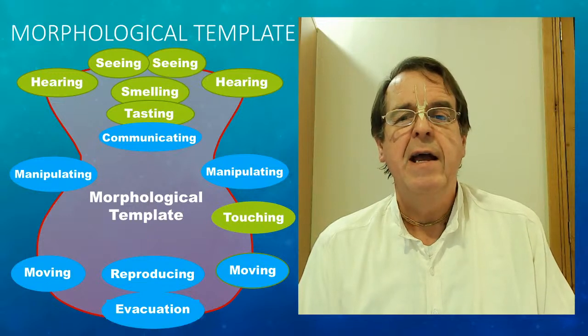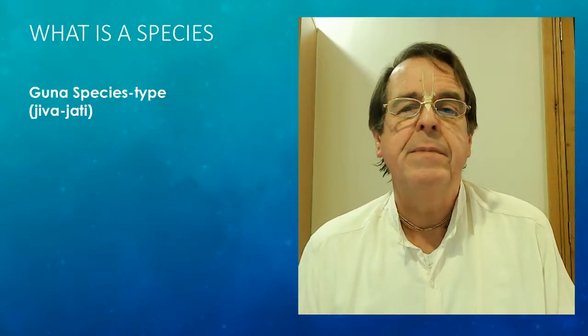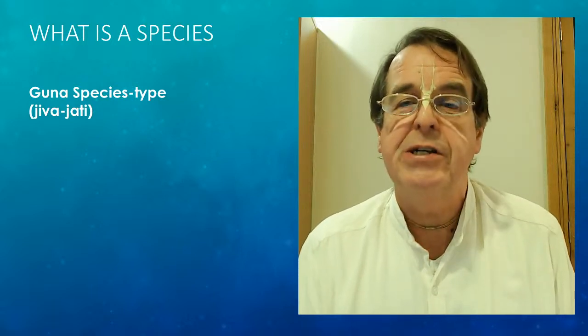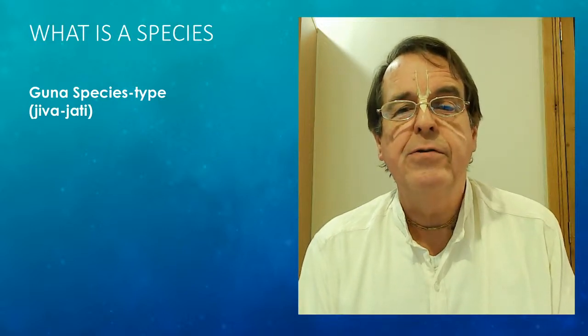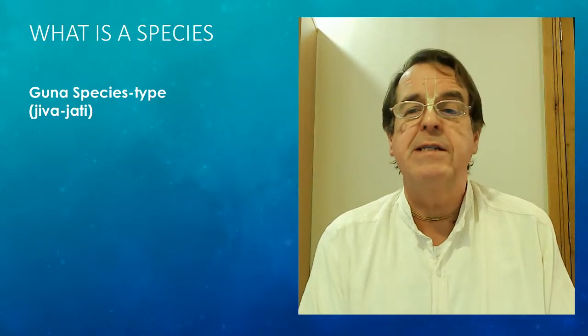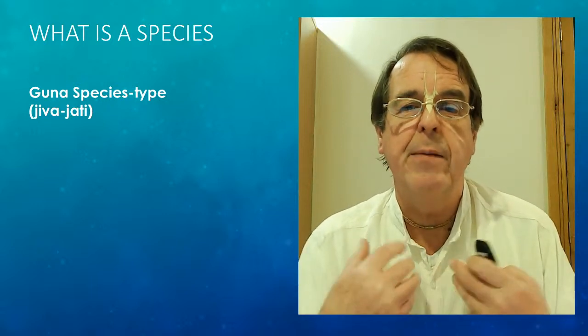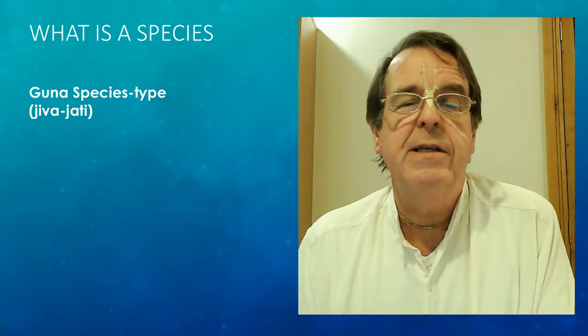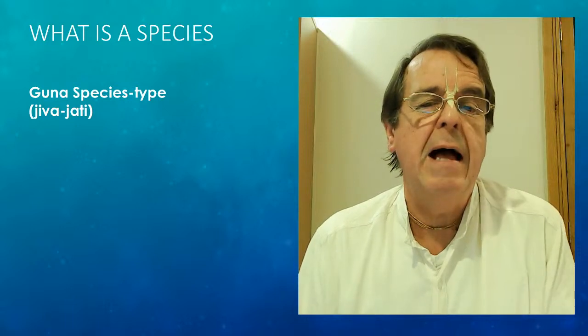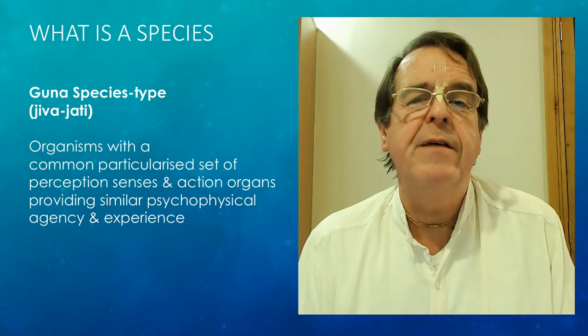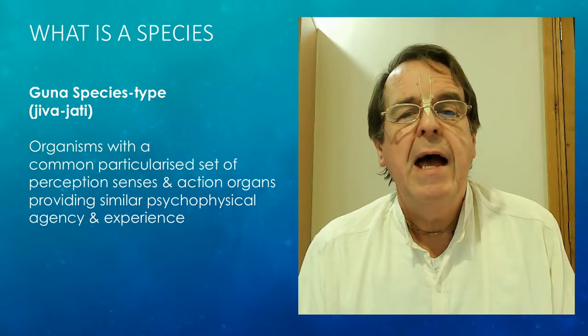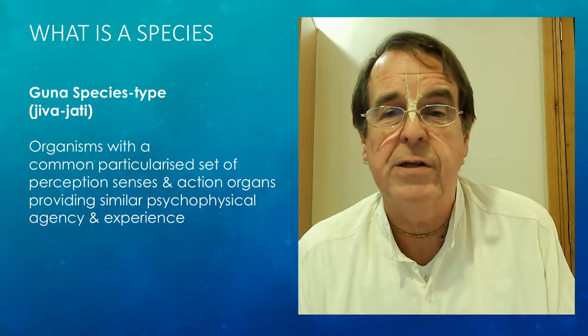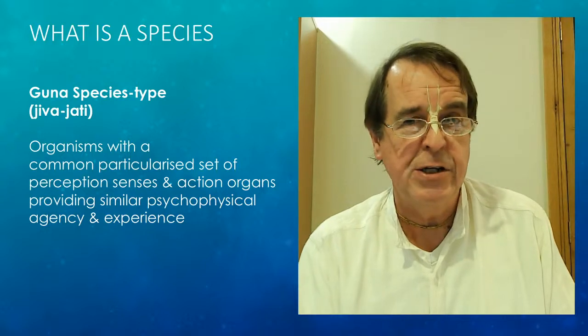Now, an important point to note is that there are a number of ways and many arguments of how scientists try to classify what is a species. It's not easy. And the Atma paradigm will use the term species type or Guna species or sometimes the Sanskrit phrase jiva jati when we're talking about species. And it's different. And don't think of it as a one-to-one relation to any standard classification definition of a species. It covers a different thing. We're using a different model. But we define a species using this term as organisms with a common, particularized set of perception senses and organ senses, and action organs rather, providing similar psychophysical agency and experience.